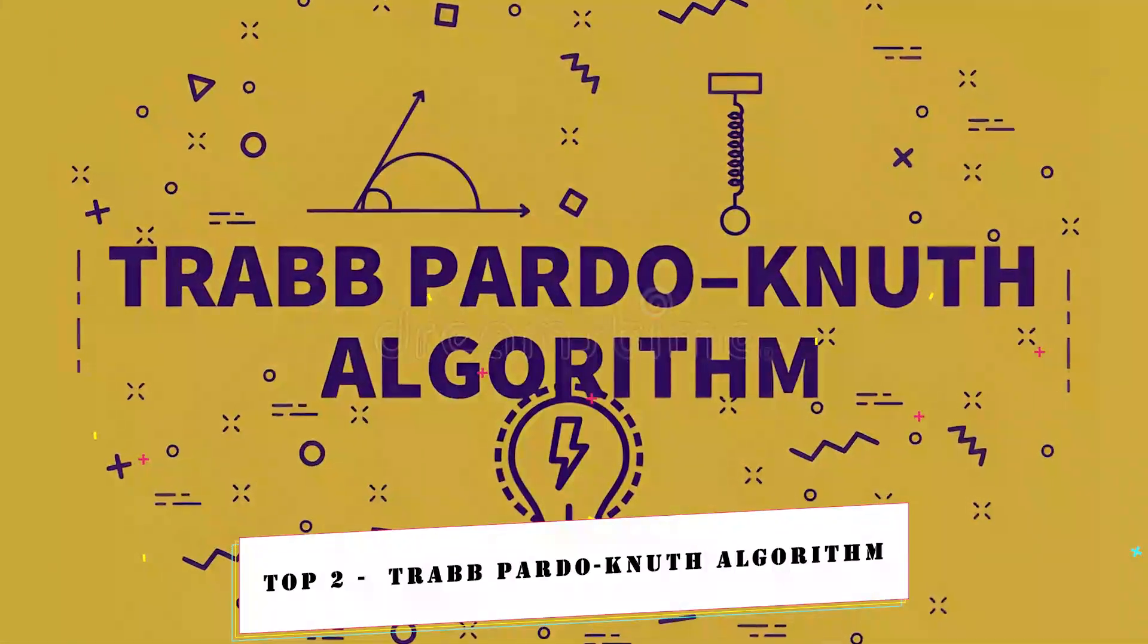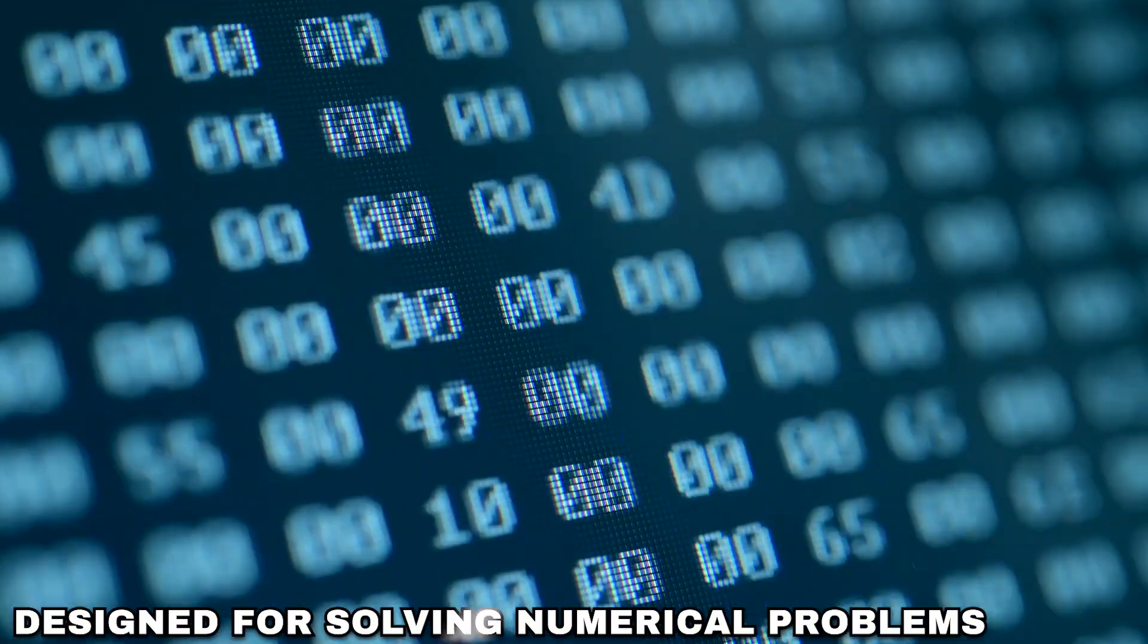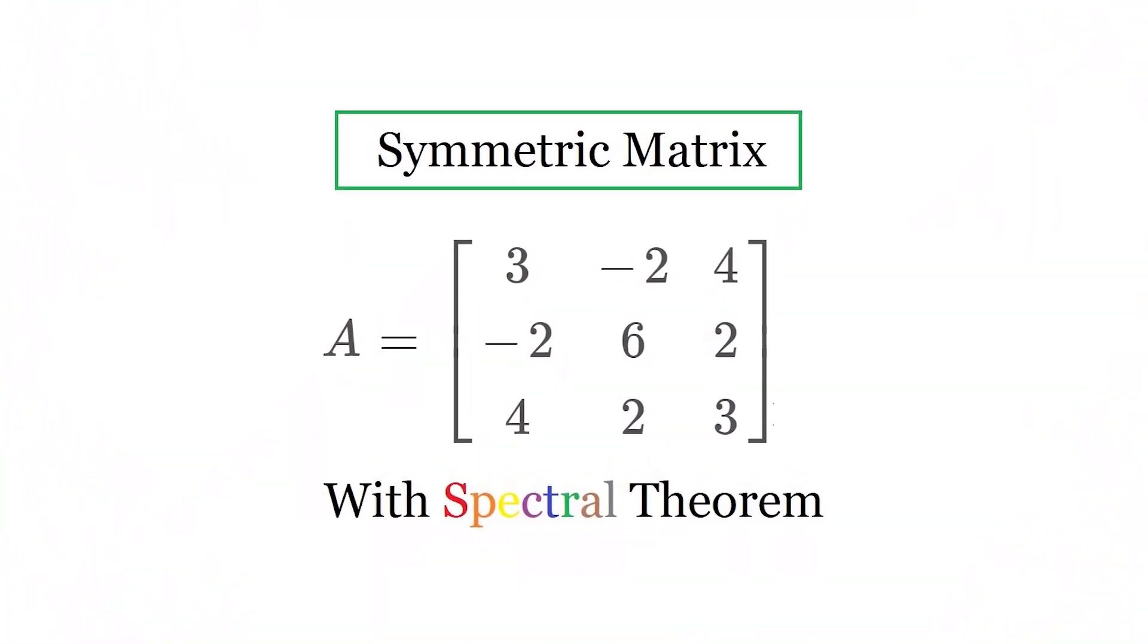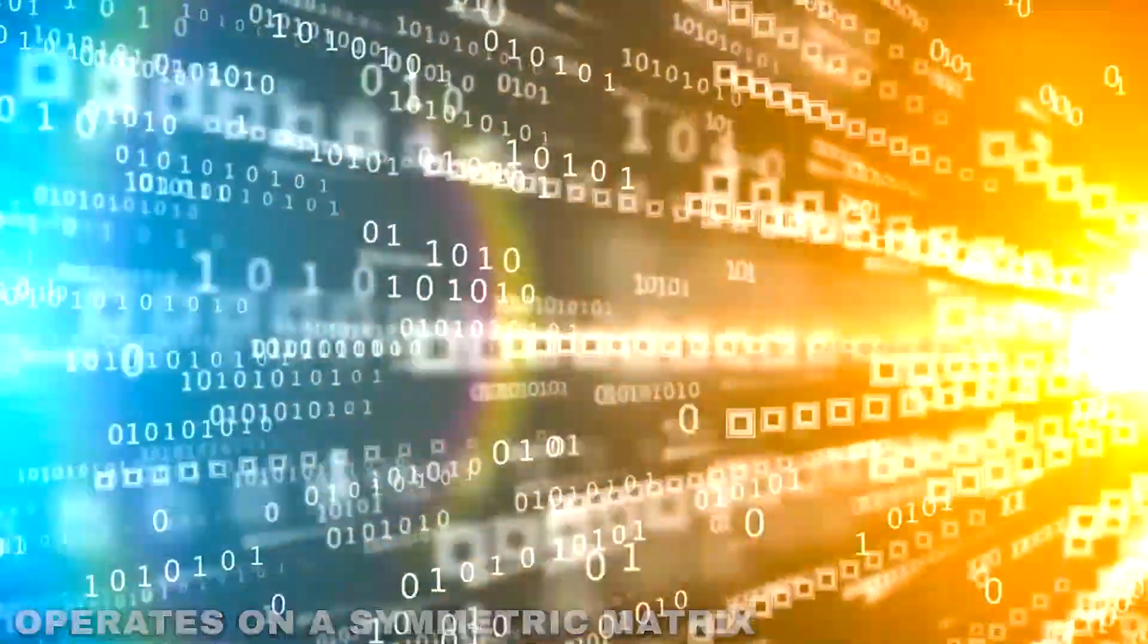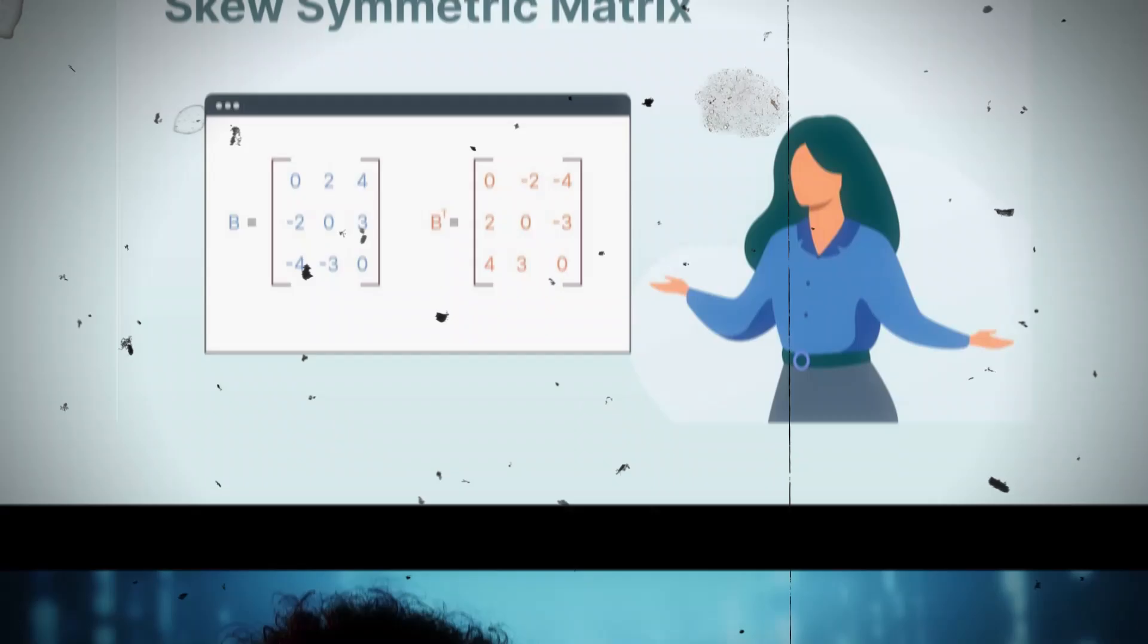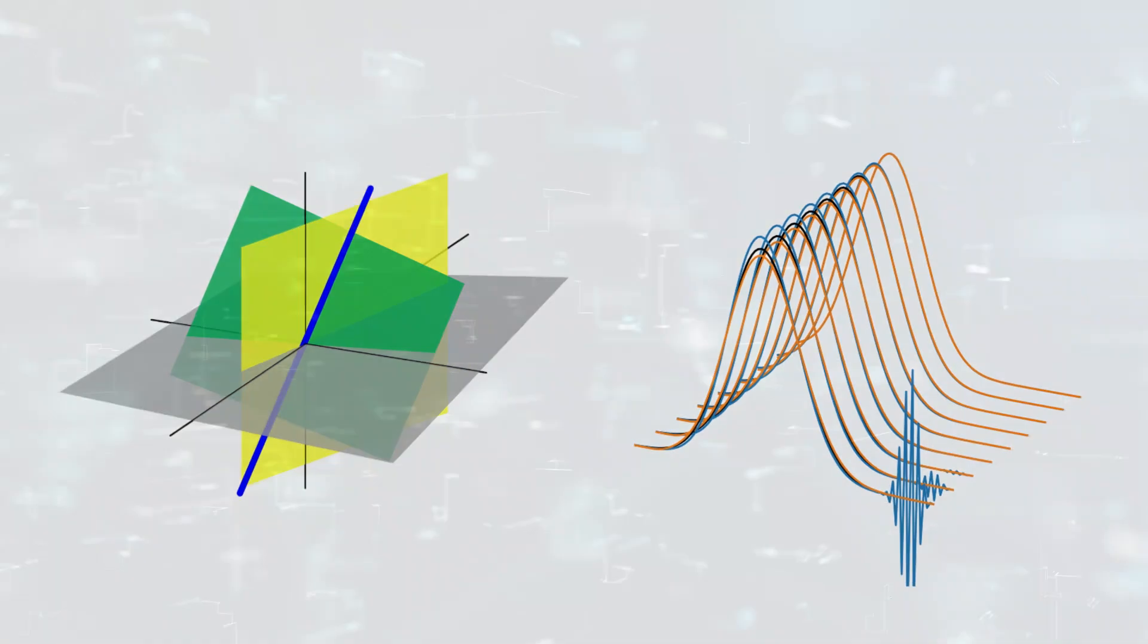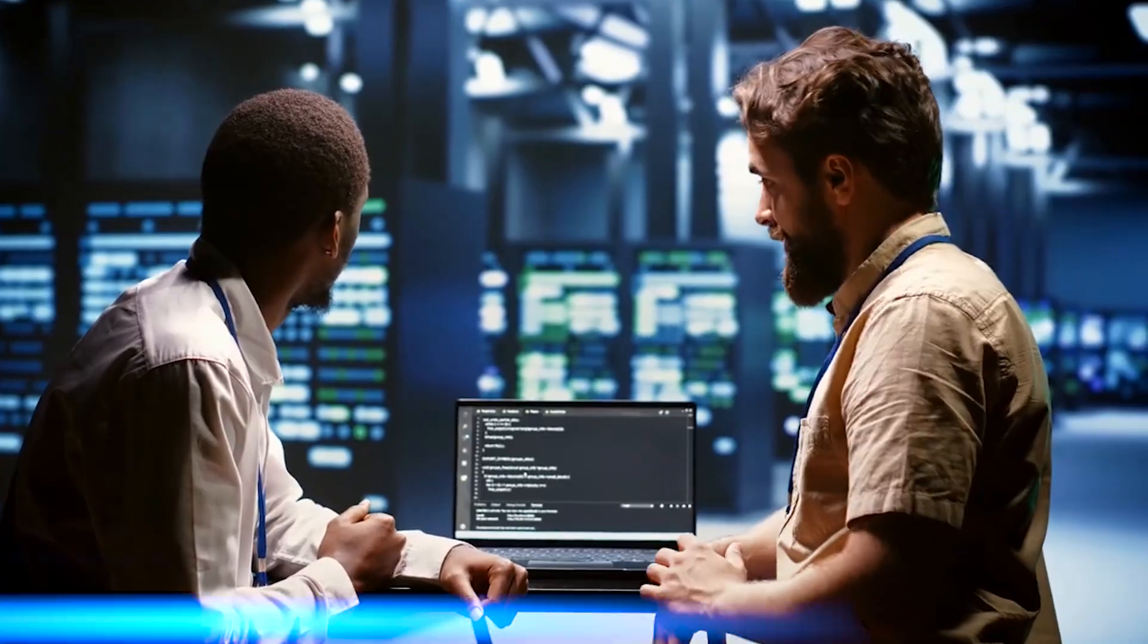Top 2. Trabb-Pardo-Knuth Algorithm. The Trabb-Pardo-Knuth Algorithm is a unique algorithm designed for solving numerical problems. In particular, this is used for numerical inversion of a symmetric matrix. The algorithm operates on a symmetric matrix and involves a series of mathematical operations to transform the matrix into a diagonal form. This process simplifies the inversion of the matrix, making it more computationally efficient. The details of this algorithm can be traced to linear algebra and numerical methods, and its uniqueness often lies in its naming convention, which pays tribute to contributors in the field of computer science.